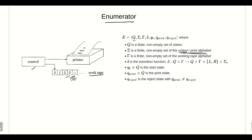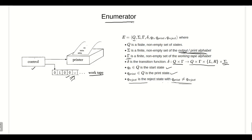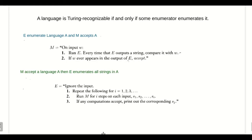Delta is the transition function from Q cross tau to Q cross tau cross {left or right} — the tape head can move either left or right, like a Turing machine — cross sigma, so at some stage it will produce an output. Q0 is the start state, Q_print is the printing state, and Q_reject is the rejecting state, which is never equal to the printing state.